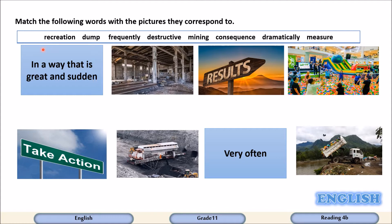Let's start with the first picture or definition: in a way that is great or sudden. When something happens in a way that is great or sudden, it happens how? Dramatically.